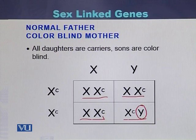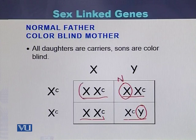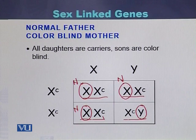The daughters will all be carriers because they have a normal allele on the other X chromosome from the father, which is normal. So the daughters will not express the disease while the sons will be color blind.